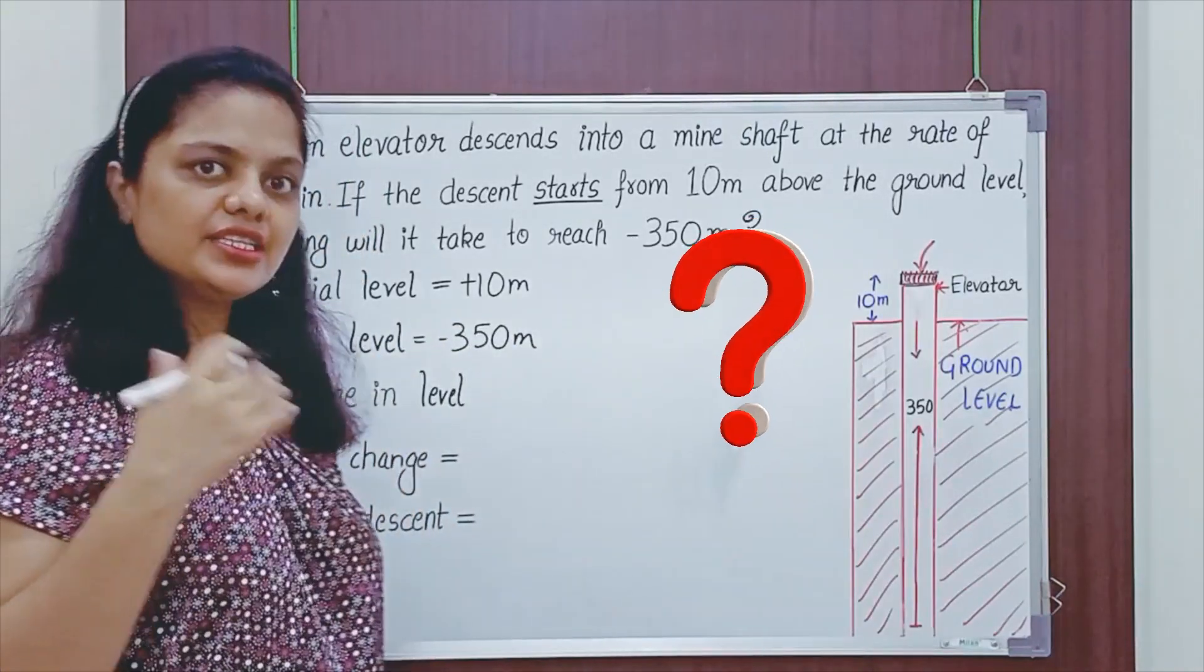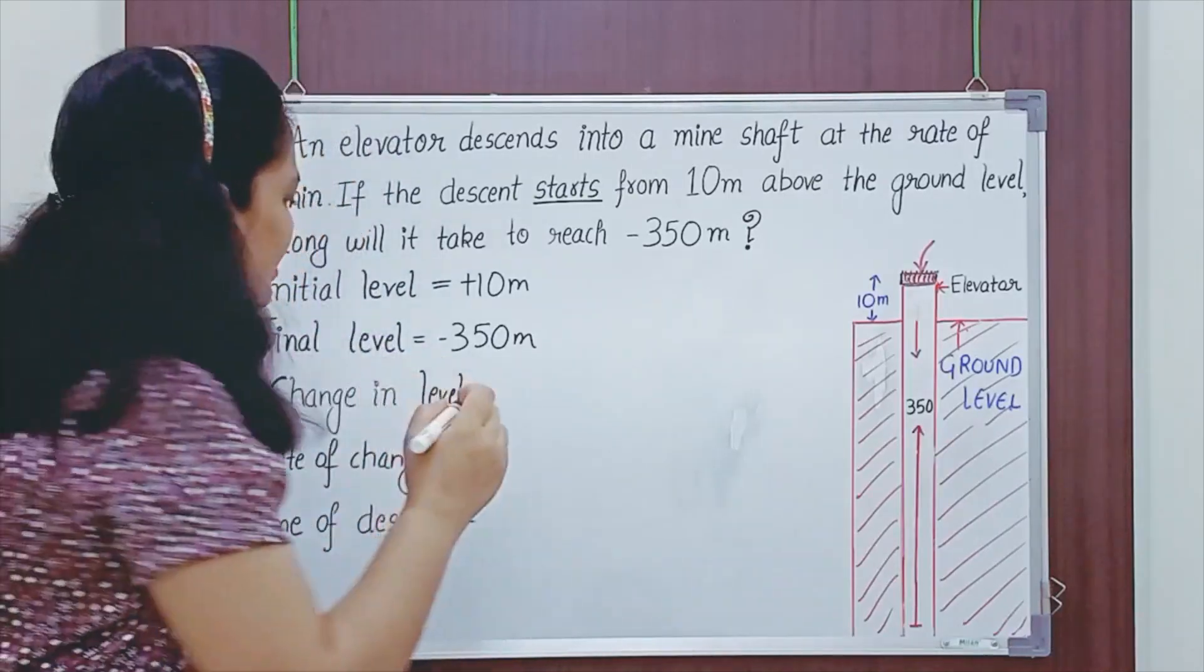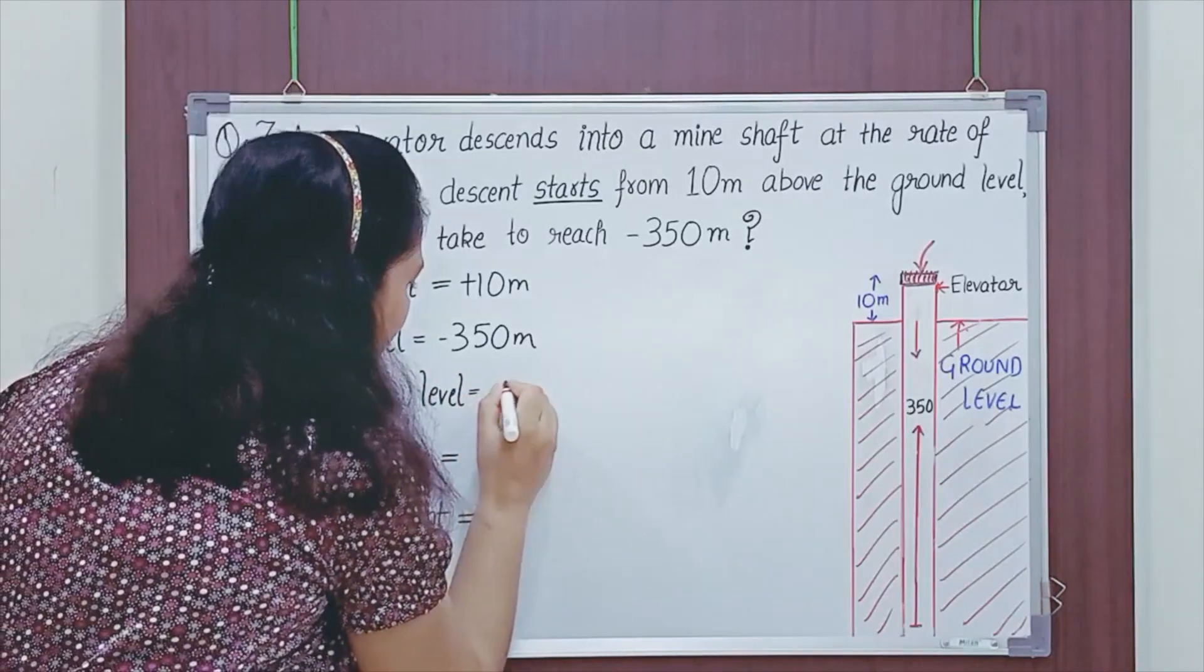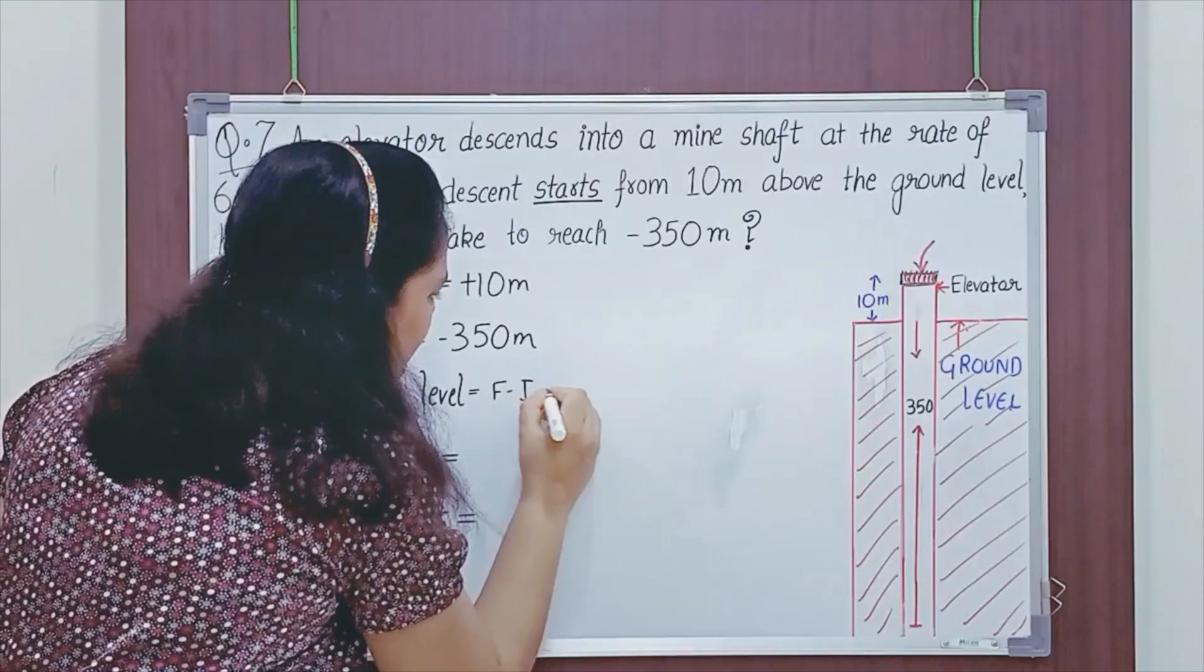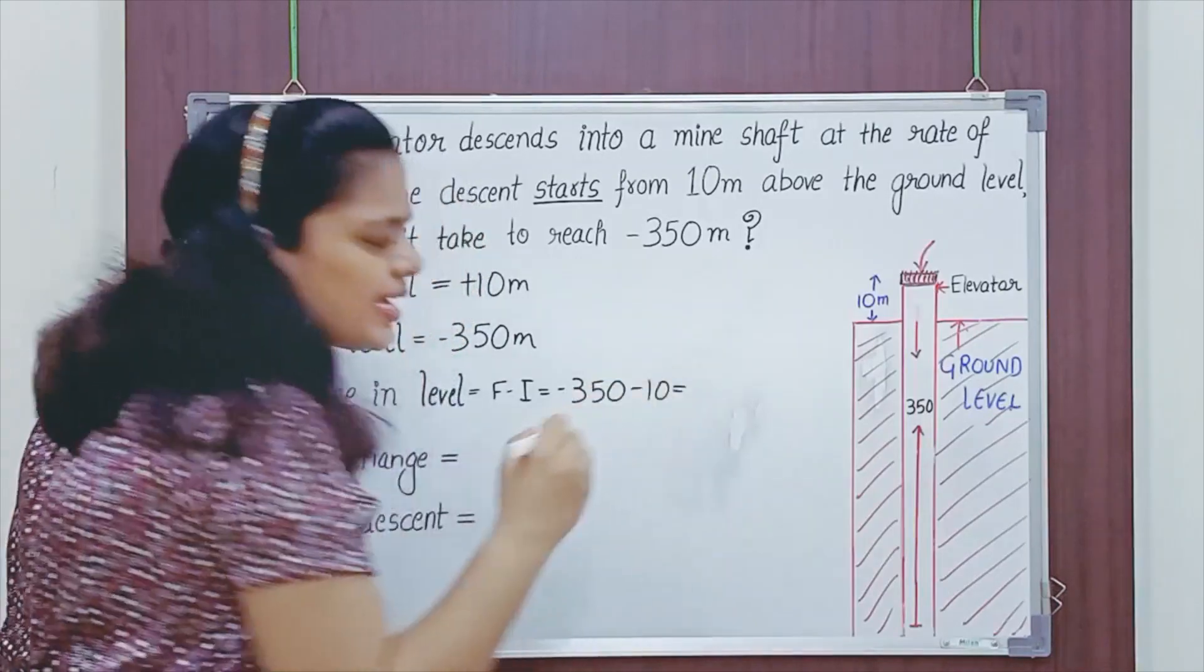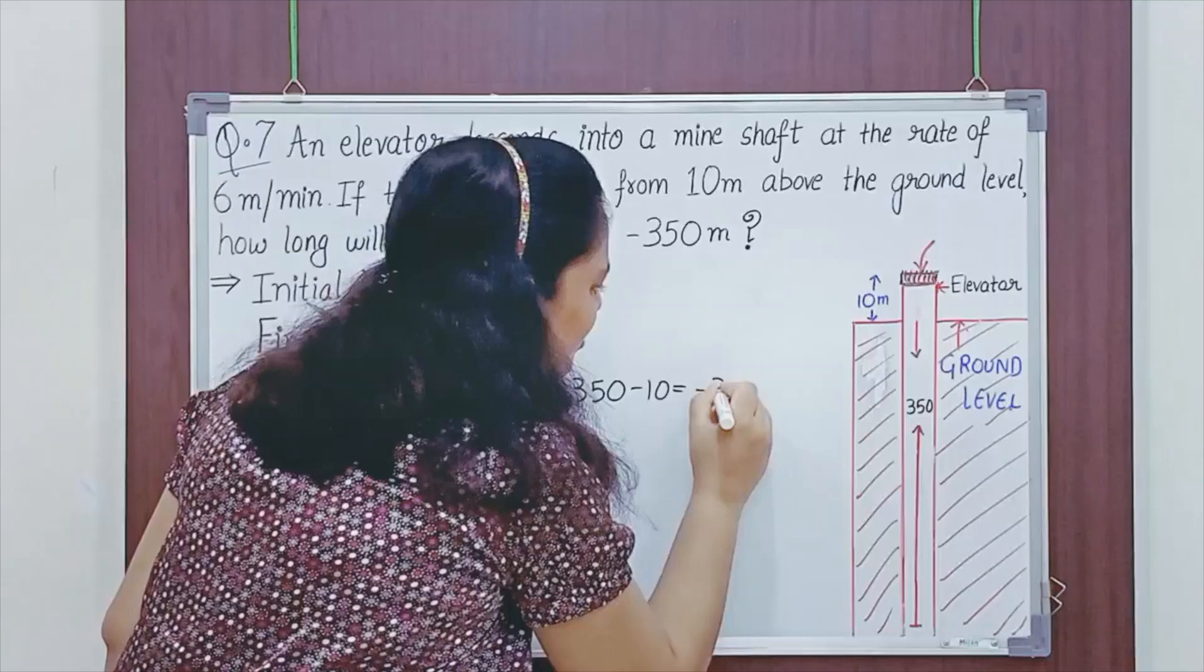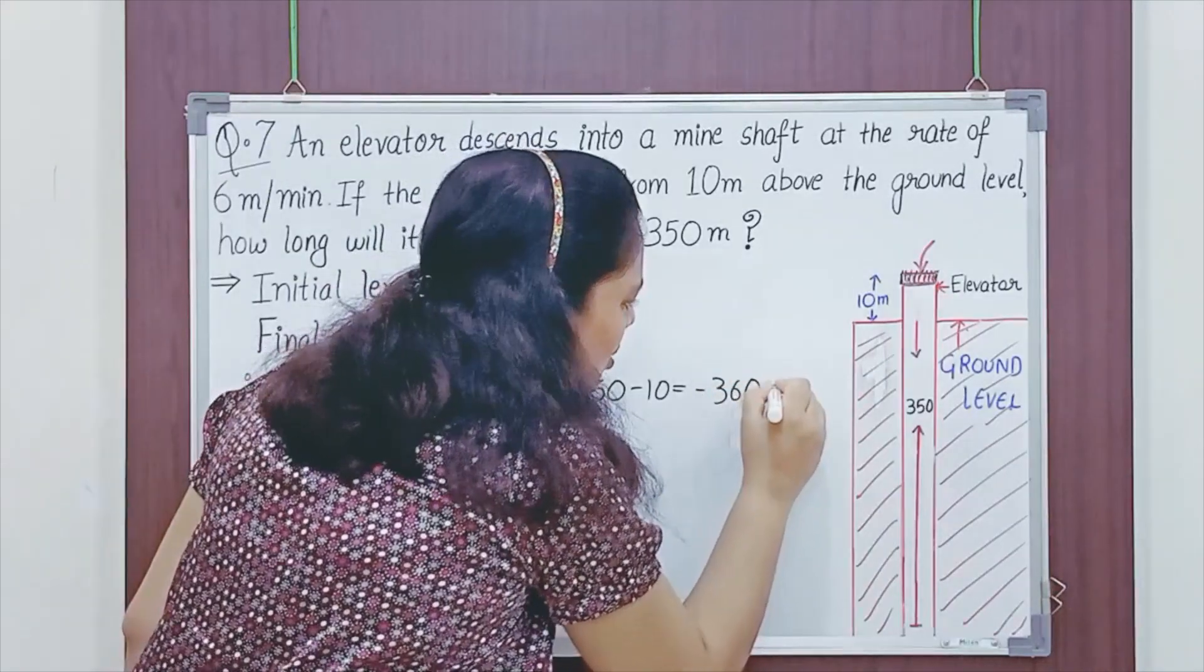Now, what is the change in level? Change, I told you in the last question also, it is always final minus initial. Final is minus 350 meters and initial is 10. So, minus 350 minus 10, which gives minus 360 meters.